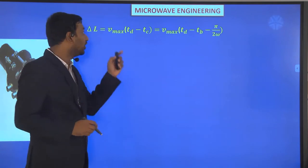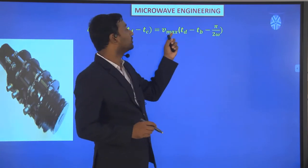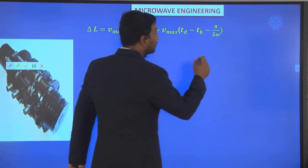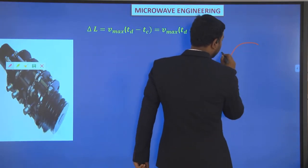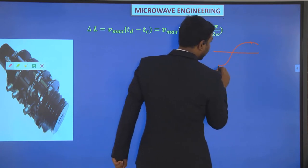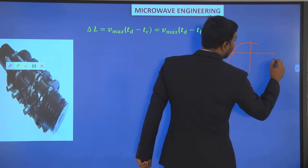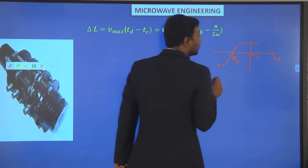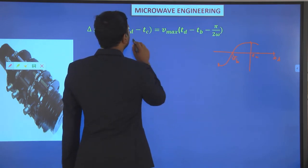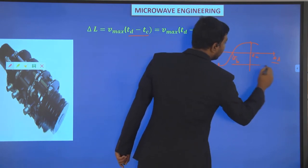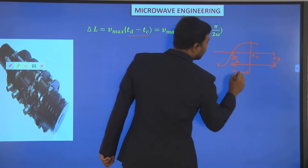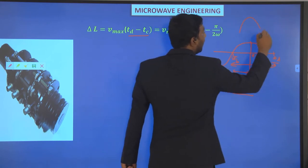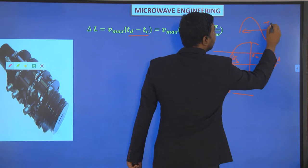For the maximum condition, Vmax times (Td minus Tc) equals Vmax times (Td minus Tb minus π/2ω). The term Td minus Tc equals T/4, which can also be written as π/(2ω), because ω equals 2πf, so π/(2ω) equals 1/(4f) equals T/4. Therefore for faster velocity: ΔL equals V0(Td minus Tb) minus (π/2ω) plus β_i·V1/(2V0) times V0(Td minus Tb).